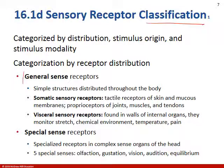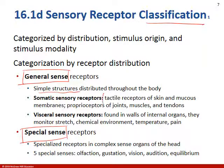Classification of receptors comes in two types: general sense receptors and special sense receptors. Think of general sense as simple structures, maybe touch like tactile receptors of the skin. And for special senses, we have five: smell, taste, vision, hearing, and equilibrium.